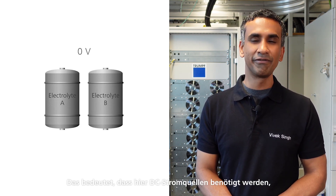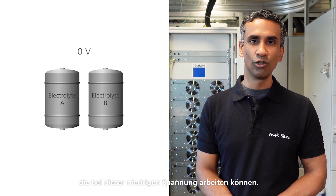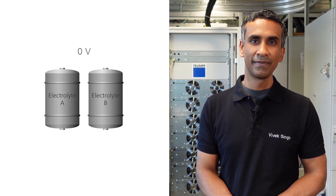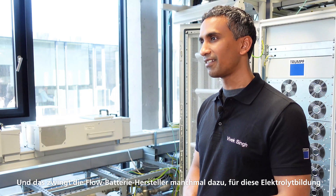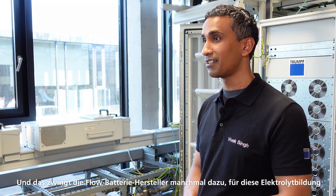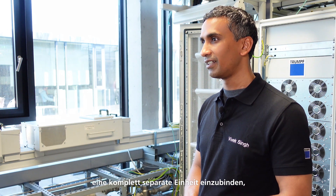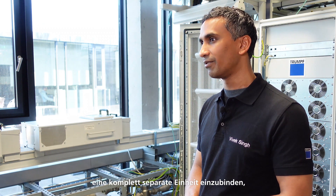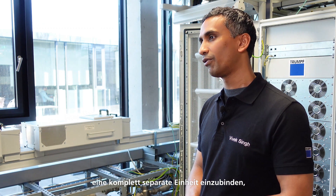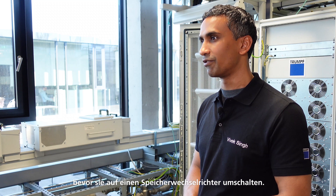This means that we require DC current sources that can operate at these low voltages, and this can sometimes force flow battery manufacturers or designers to go for a completely separate unit for electrolyte formation before switching over to the storage inverter.